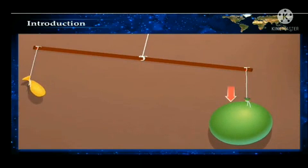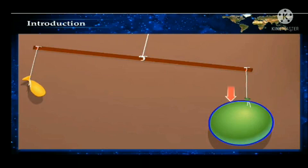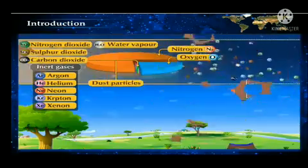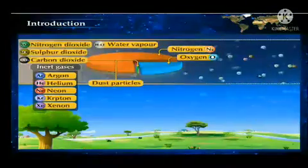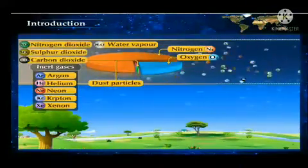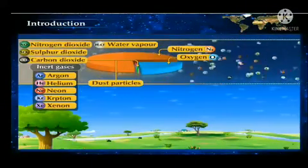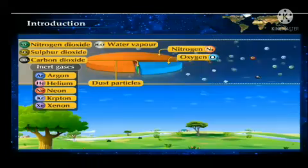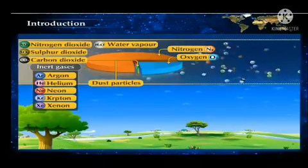Does the stick remain horizontal? Observe it. During the activity, you have seen that the balance tilts on the side of the full-blown balloon. This shows that the air has weight. Air is a mixture of gases. Therefore, like all other matters, it has mass and weight.